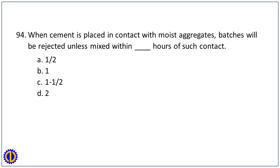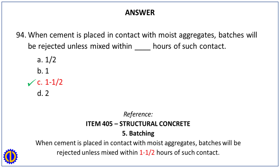Question 94. When cement is placed in contact with moist aggregates, batches will be rejected unless mixed within blank hours of such contact. A. 1/2. B. 1. C. 1½. D. 2. Answer: C. 1½ hours. Reference: Item 405, Structural Concrete, Batching — when cement is placed in contact with moist aggregates, batches will be rejected unless mixed within 1½ hours of such contact.